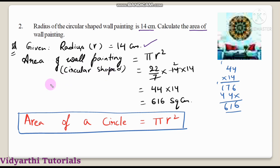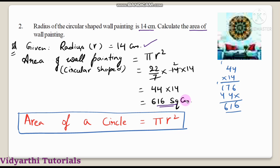The wall painting is circular shape, so area of circle formula is pi r square. Substituting: 22 by 7 into 14 into 14. The 7 cancels with 14 — 7 twos are 14 — so we get 22 into 2 is 44, into 14 is 616. The area of the circular shaped wall painting is 616 square centimeters.